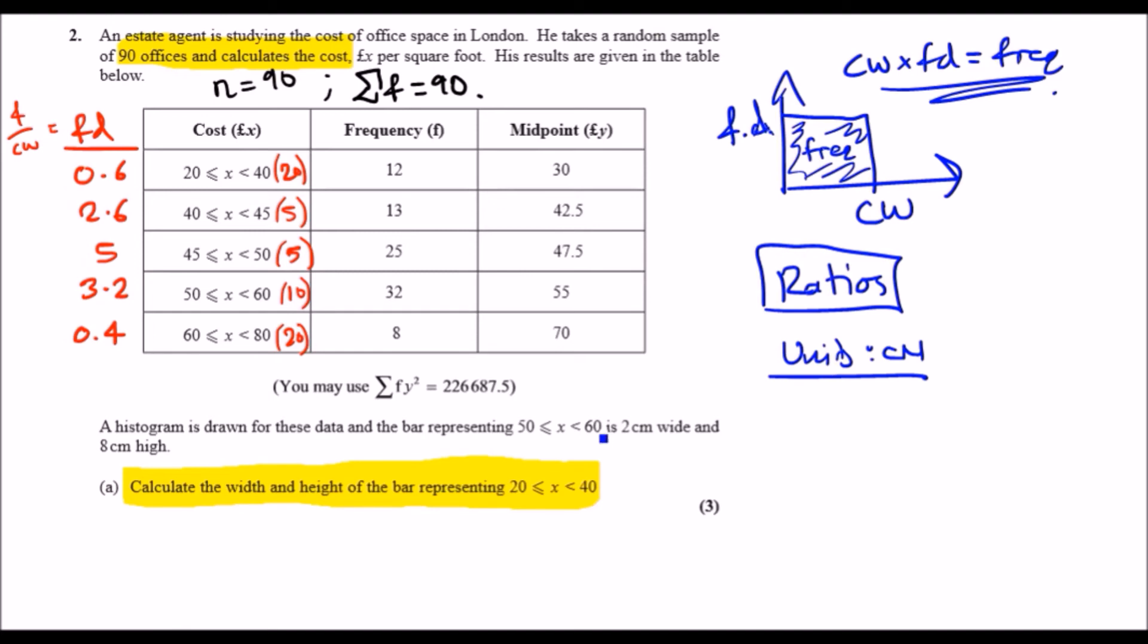Alright, so let's just discuss the 50 to 60 bar. We can say for the 50 to 60 bar, let's discuss firstly the frequency density, the height. This is the frequency density. We can say that for every 3.2 units of height, this is equivalent to 8 centimeters.